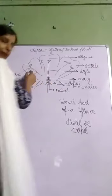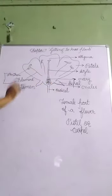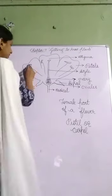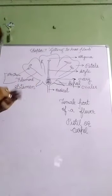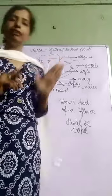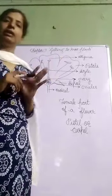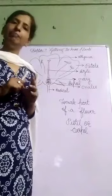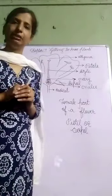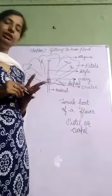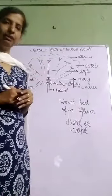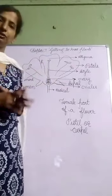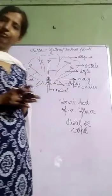And the male part is called stamen. It has two main parts: anther and filament. Anther and filament are the two main parts of the stamen, which is the male part of a flower.